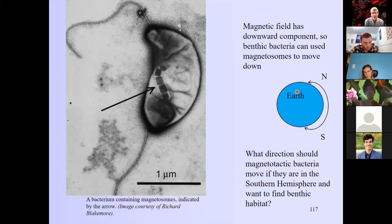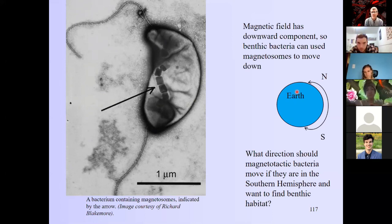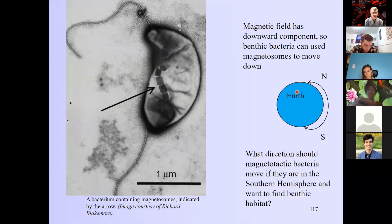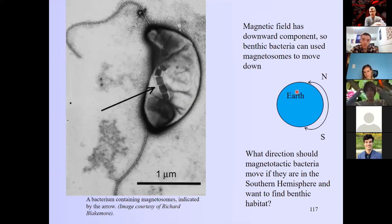In the southern hemisphere, bacteria should go south to find the benthic habitat. Interestingly, if you take northern hemisphere bacteria going north and flip the magnetic field, harvesting the ones that go south, the mutation spreads and the population is taken over by those moving south. There's also an exciting medical application — magnetosomes can have drugs attached to them, injected into the circulatory system, and a magnet placed at a tumor site to deliver the drug directly.